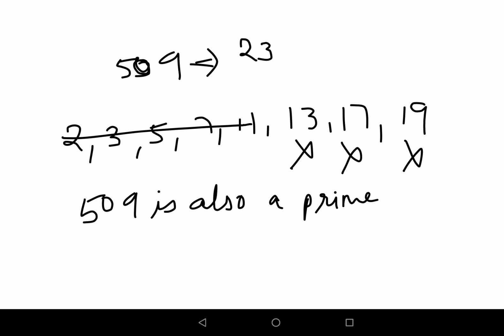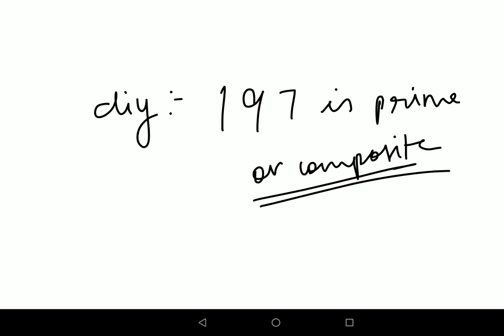So now for your DIY, I want all of you to tell me whether the number 197 is prime or composite. Do let me know your answers in the comment section.